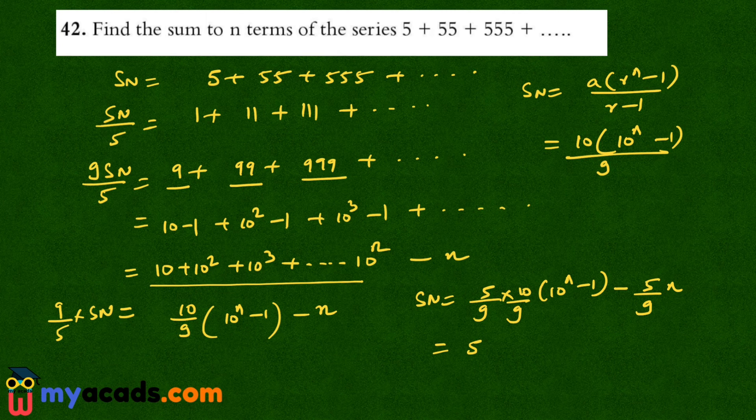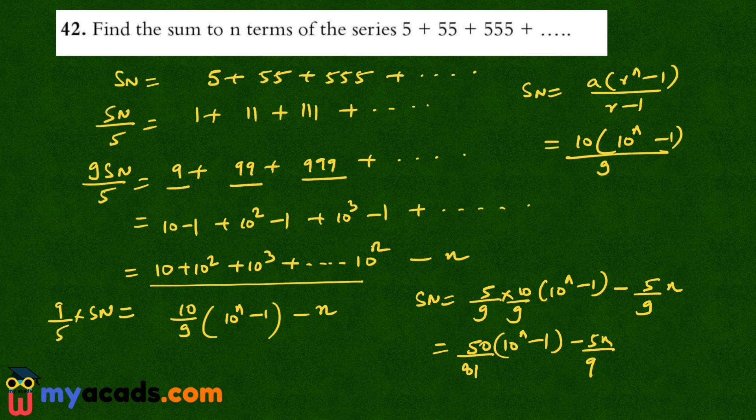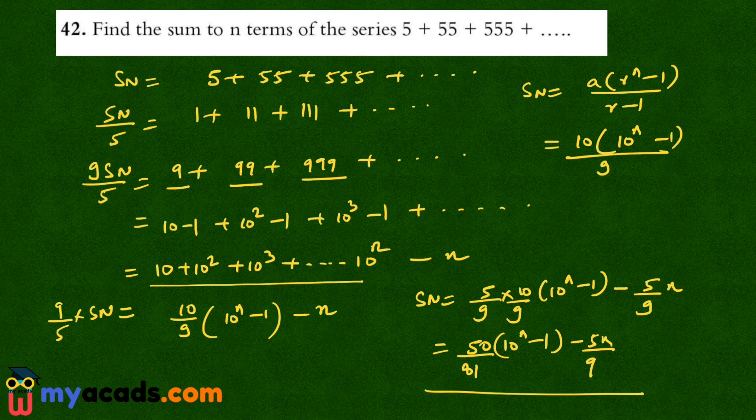So this will become 50 upon 81 into 10 raised to the power n minus 1 minus 5n by 9. So this is the sum of this series.